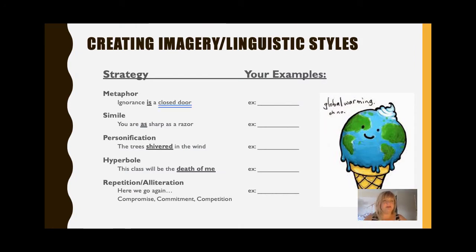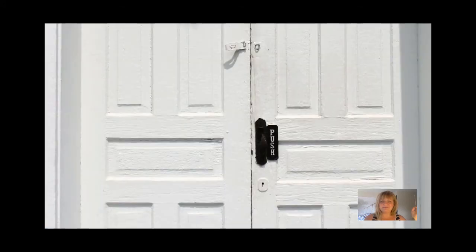We've already talked about the way that language can be used to create imagery. Here are the strategies we can use to create that imagery. A metaphor, for example — what is a metaphor? A metaphor is the pairing of two independent ideas with the word 'is' in between them. So, for example, 'ignorance is a closed door.' It's one thing to say that ignorance represents closed-mindedness, but the use of a metaphor — that door — helps paint a vivid, detailed picture that our listeners can interpret. It engages our senses by creating a visual, maybe through a slide, or even a sound as we think about the shutting or closing of a door.